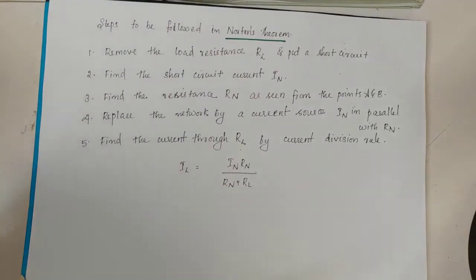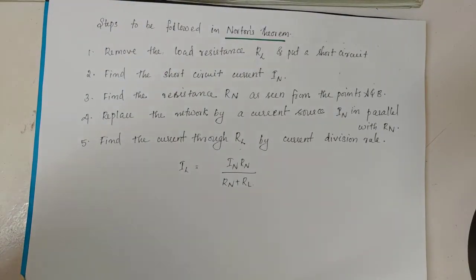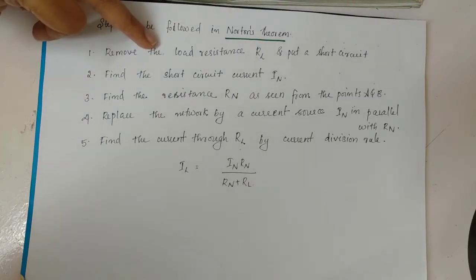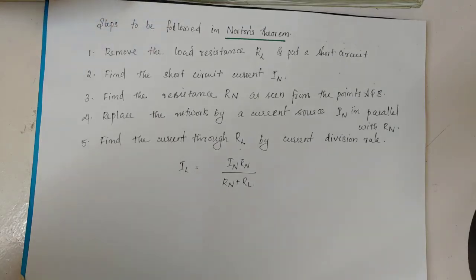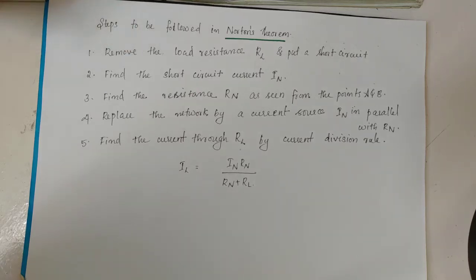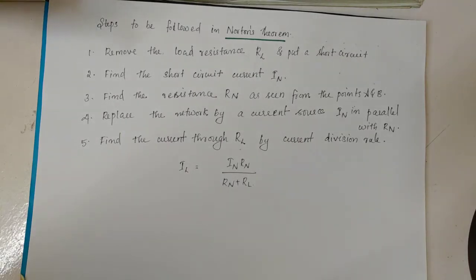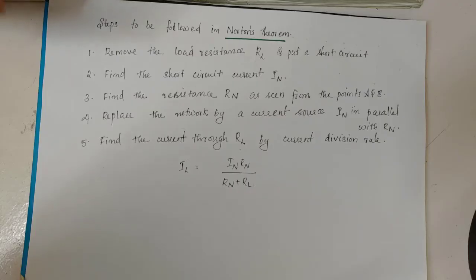In Norton's theorem, the steps involve a short circuit current. In Thevenin's theorem we have an open circuit voltage and a series resistance, whereas in Norton's theorem we have a short circuit current and a parallel resistance. The short circuit current is called the Norton current.